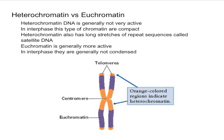That brings us to heterochromatin. Heterochromatin generally is DNA that's not very important and it's not very active. Therefore, heterochromatin is just a region of DNA that is relatively inactive, and so it's going to be compact during interphase.